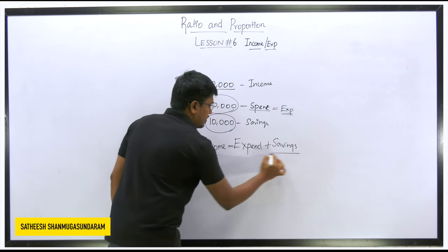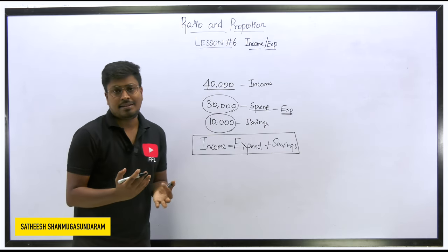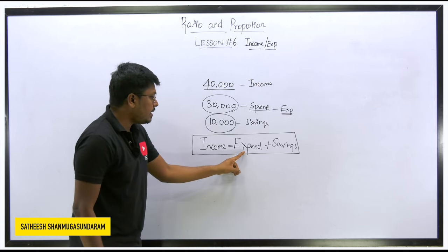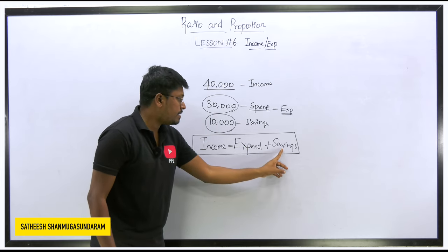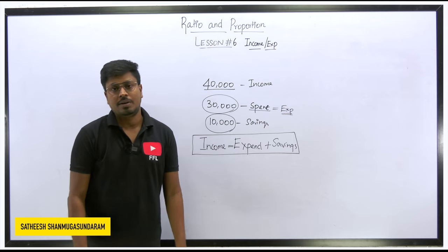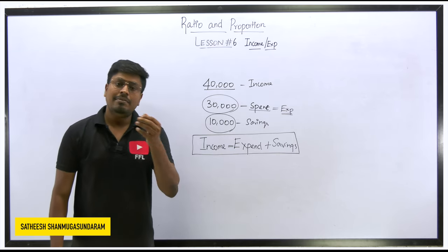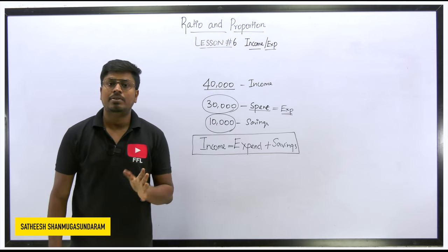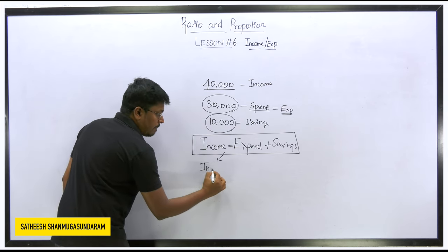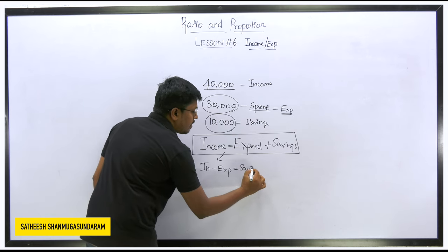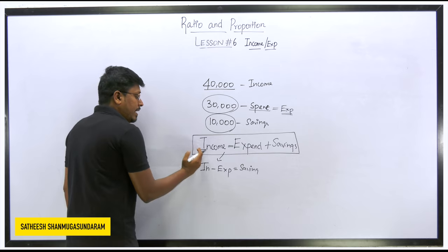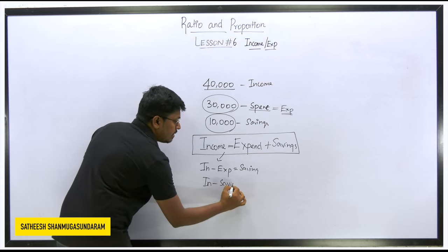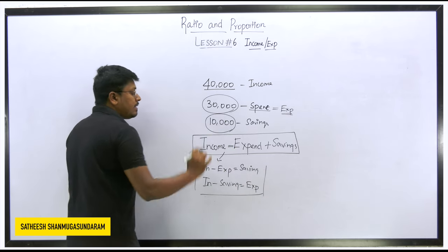This isn't just a formula — it's the basic concept. Income equals expenditure plus savings: 40,000 equals 30,000 plus 10,000. You can also write it as income minus expenditure equals savings, or income minus savings equals expenditure. All three forms are equivalent. By learning just this one concept, you can derive all the different formula variations.